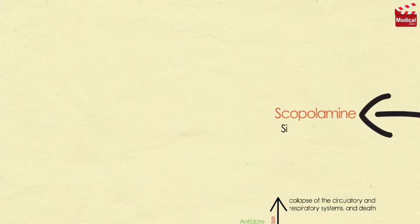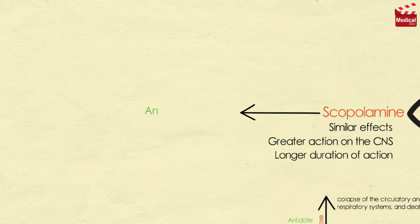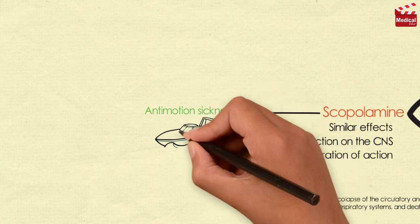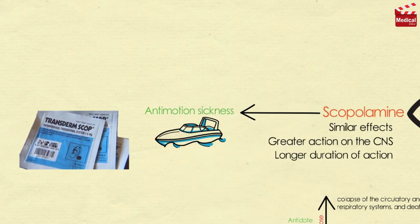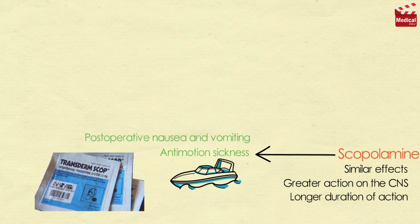Other antimuscarinic agents: scopolamine produces effects similar to those of atropine but has greater CNS action and a longer duration. It is one of the most effective anti-motion sickness drugs available, and is available as a topical patch that provides effects for up to three days. Scopolamine is also used for post-operative nausea and vomiting, and has the unusual effect of blocking short-term memory.